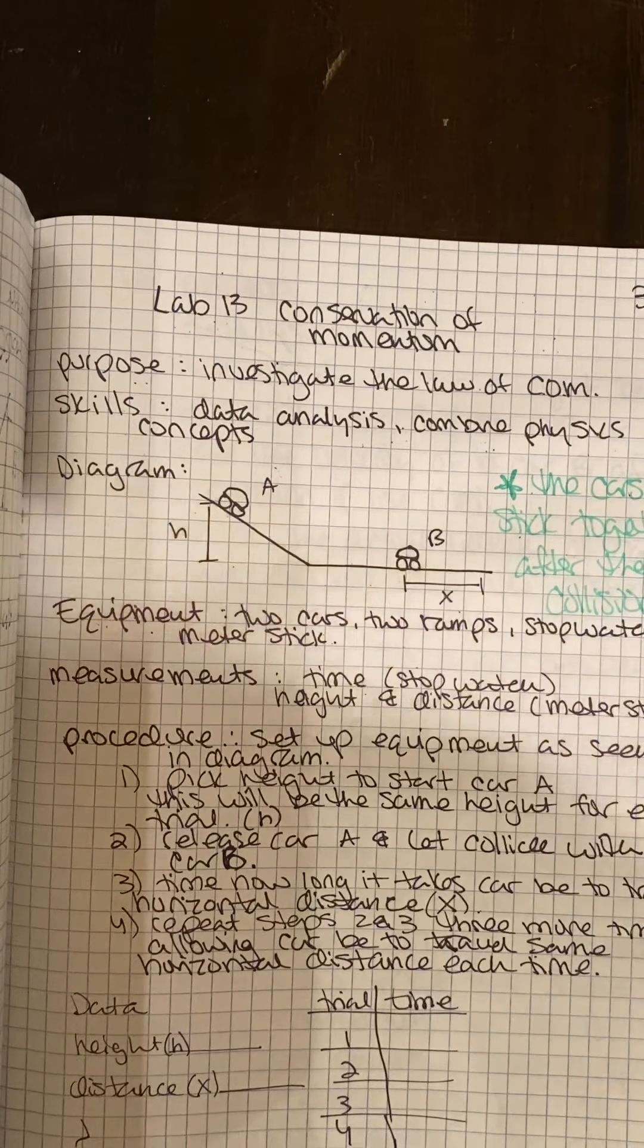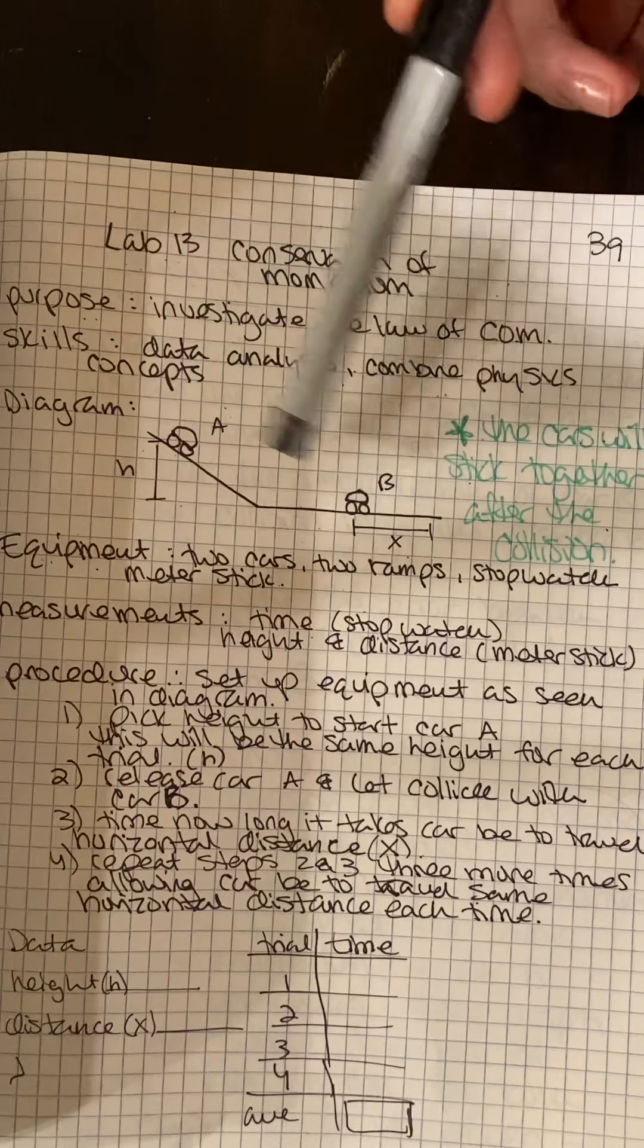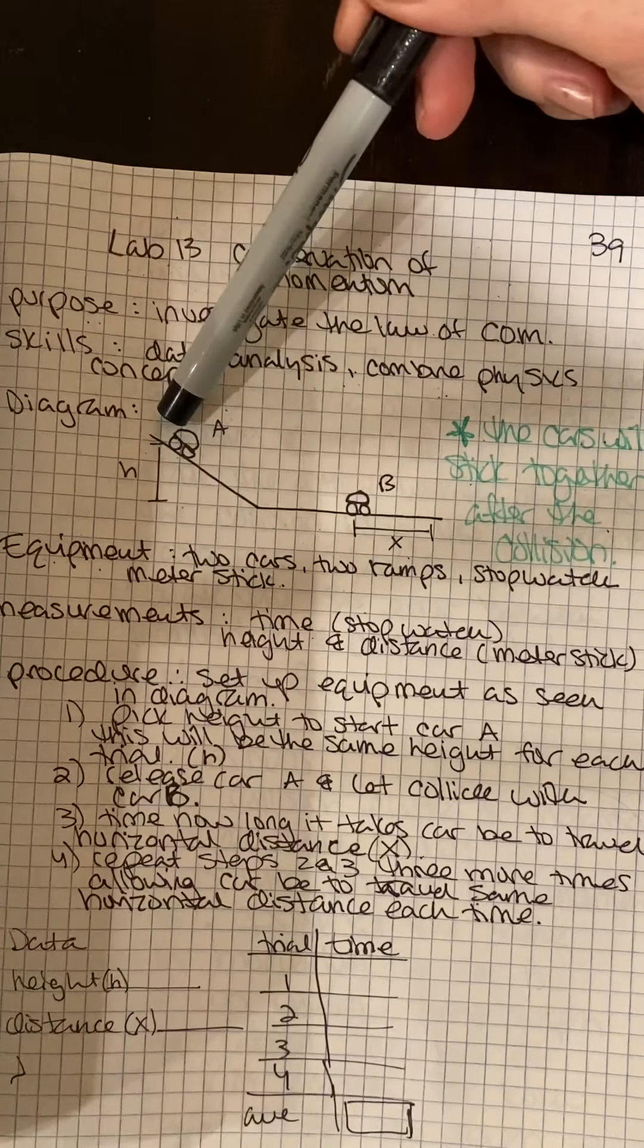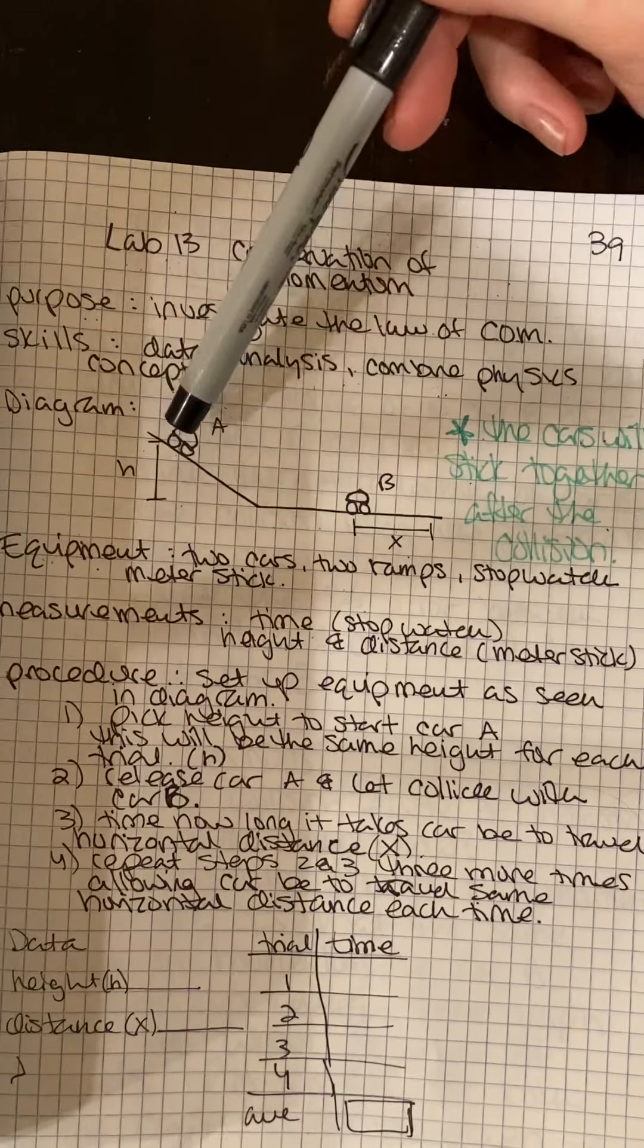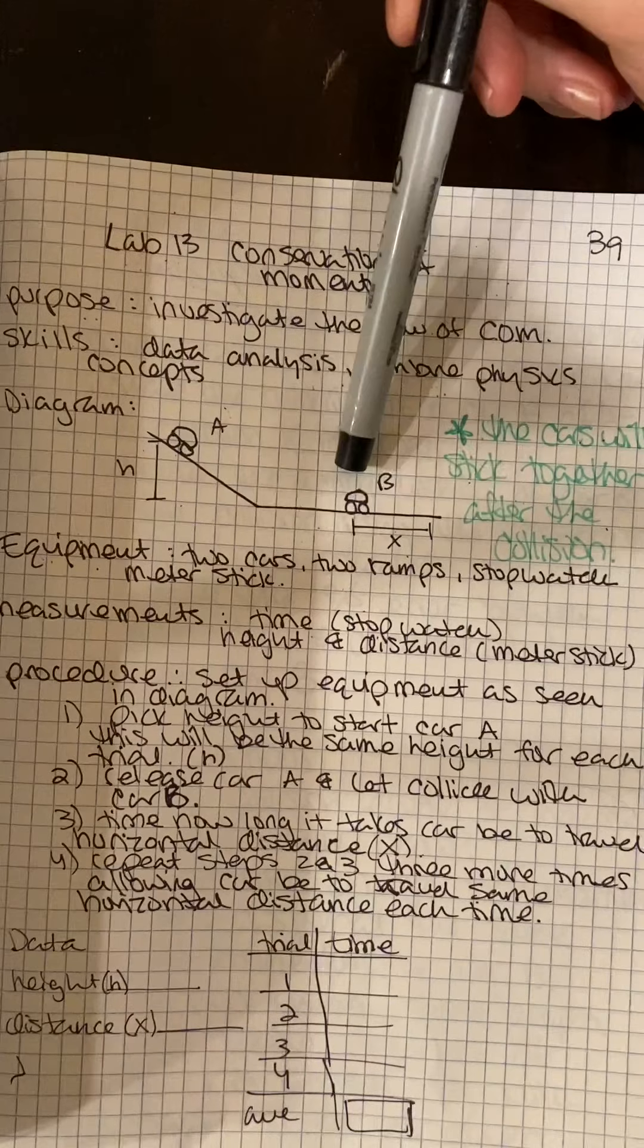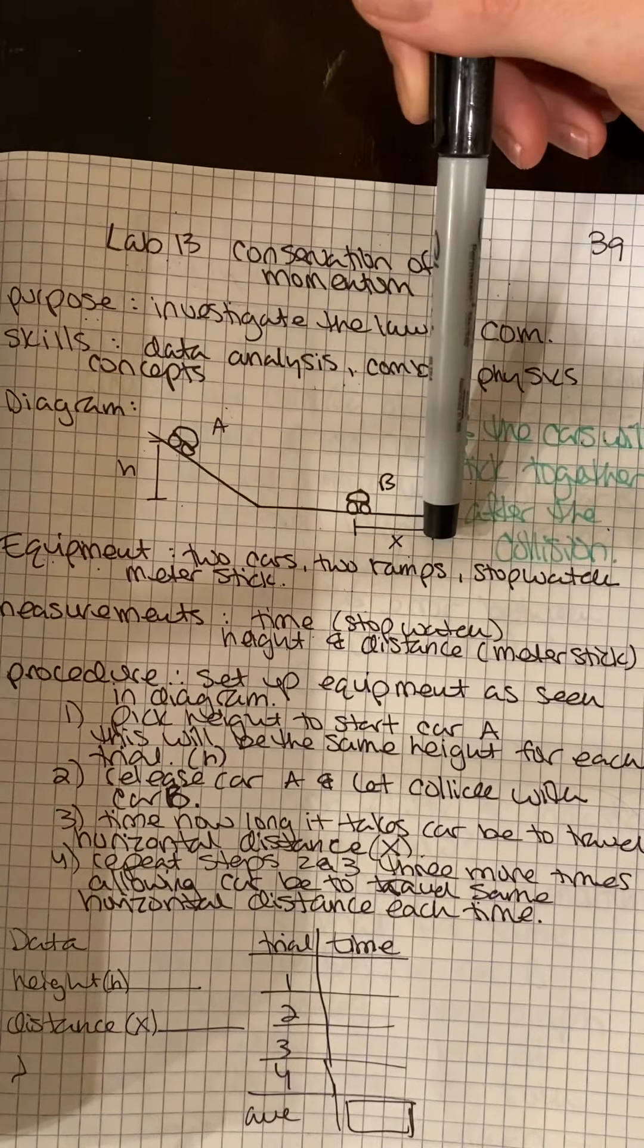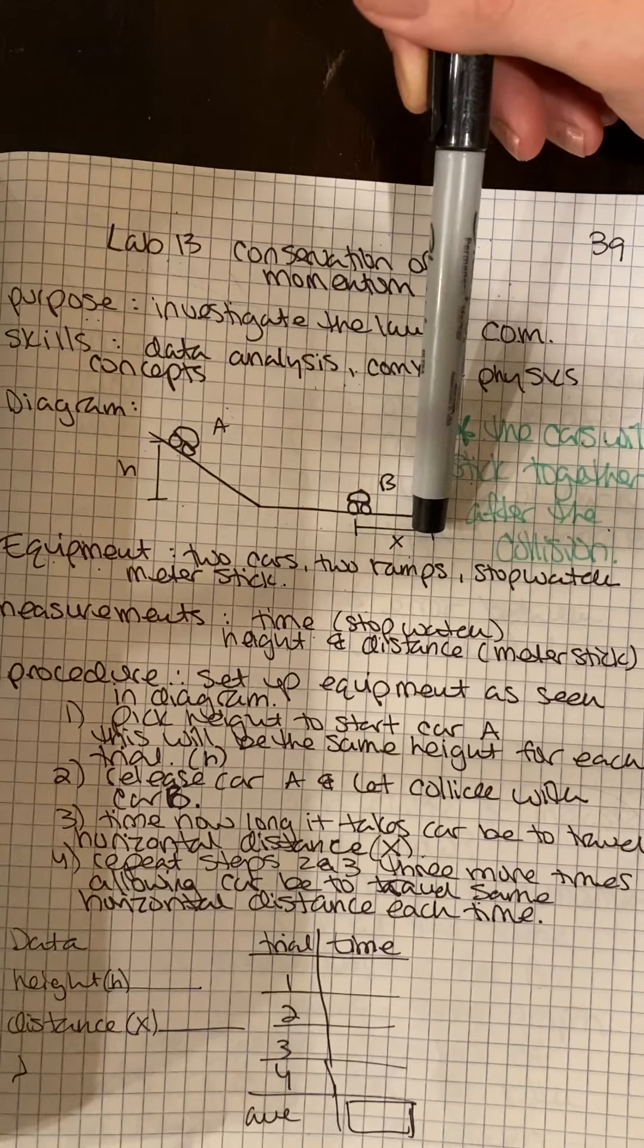What we're going to end up doing for our lab is we are going to set up two pieces of track with our two cars. One car is going to be some height here that you determine yourself. We're going to send this car down the track. It will collide and stick with our second car. And then the two car system is going to travel some horizontal distance that you determine yourself.